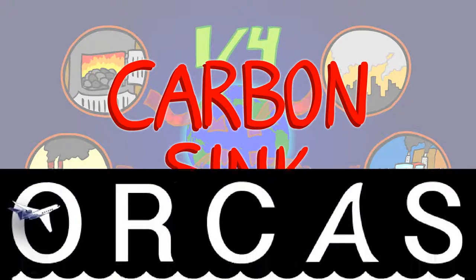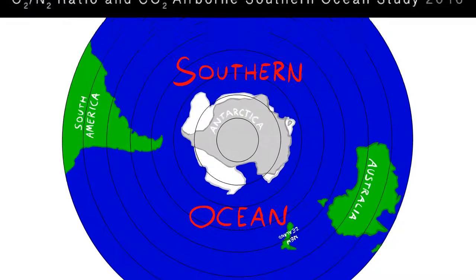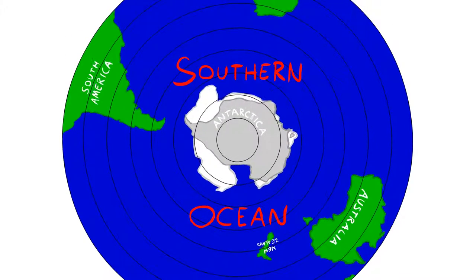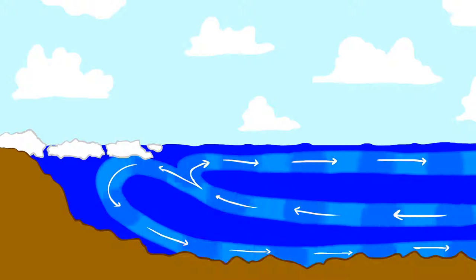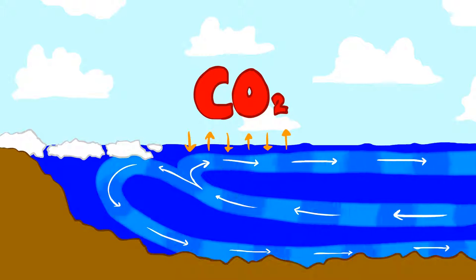And that brings us back to ORCAS. The Southern Ocean is unique. It's where the world's oceans meet, poleward of 30 degrees south and surrounding Antarctica. It's where deep ocean water upwells to the surface, allowing CO2 exchange with the atmosphere.